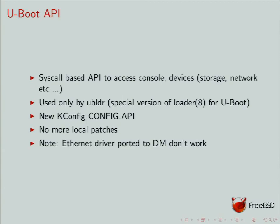The U-boot API is a syscall-based API. It was developed initially by Semialf, who does a lot of FreeBSD embedded-related work. It gives us access to the console so you can put strings on the serial port, and to some devices — mostly storage and network. Using this syscall-based API, UBLDR can enumerate SD cards, disk devices, and sometimes USB. It can also enumerate network interfaces, for example if UBLDR wants to PXE boot.